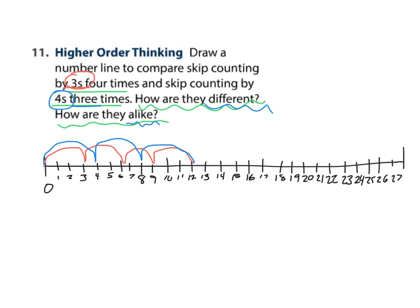How are they different and how are they alike? Notice one number line shows three jumps, one number line shows four jumps. Also notice that something that's similar is they both land on 12. So when you look at our red number line we are skip counting by three four times which equals 12, and then our blue number line skip counting by four three times that also equals 12.